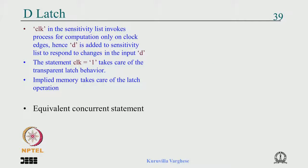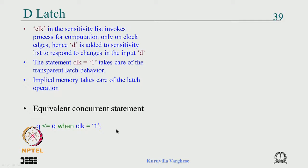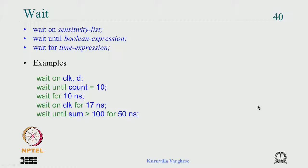You can write an equivalent concurrent statement: Q gets D when clock is equal to 1, with no else clause. You can also use the 'wait on' syntax inside the process instead of a sensitivity list — wait on clock, D. In that case you do not write the sensitivity list at the beginning. There are three wait syntaxes: wait on, wait until, and wait for.